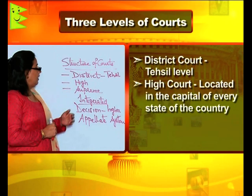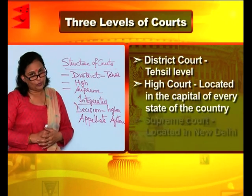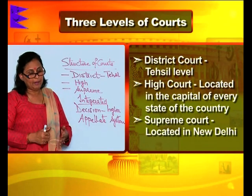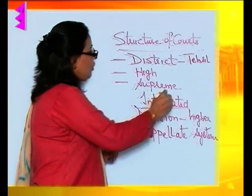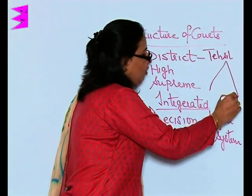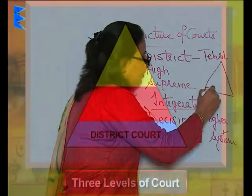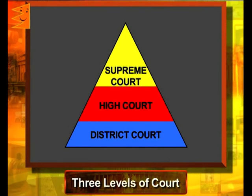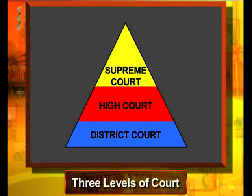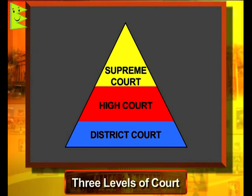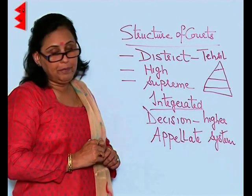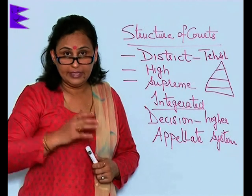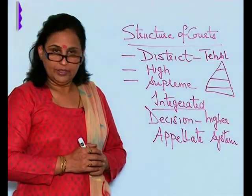The highest body is the Supreme Court, which is located in New Delhi, the capital of India. So the structure of courts in India has three levels: the district court, the high court, and the Supreme Court. The decision of the Supreme Court is final.